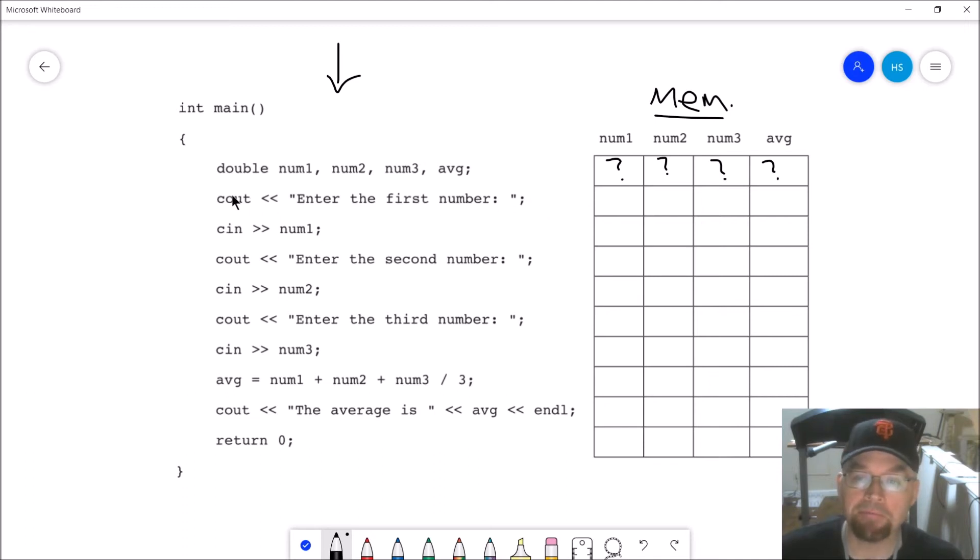There's going to be something there, you just might not have put it there. Whatever happened to be in that memory location when the operating system started running your program is what's going to be in those memory locations. The next line executes - we see on the screen 'enter the first number'. That doesn't impact my memory. This line says cin num1, reading input from the user. So let's say that the user typed in 10. How would my memory change? Well, 10 would go into the num1 spot, but it's not just 10 - what data type is num1? It's a double, so it's actually 10.0, a floating point number.